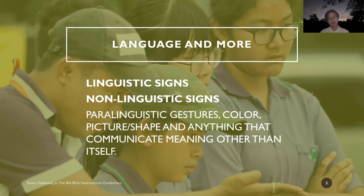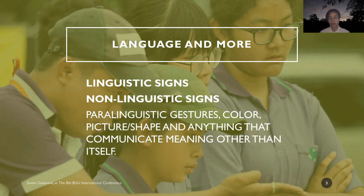When it comes to real communication, we use language and in fact a lot more to communicate. We have linguistic signs — the verbal signs, any language or code we use. And at the same time, we also use non-linguistic signs like paralinguistic gesture, color, picture, shape — anything that communicates meaning other than itself. So in terms of form, there is quite a lot.